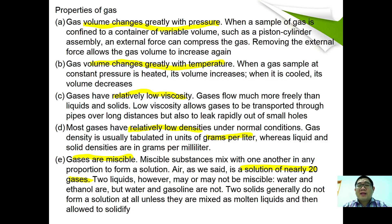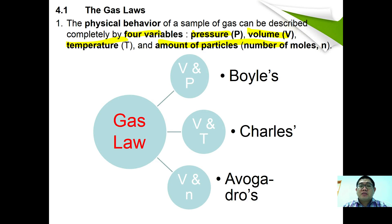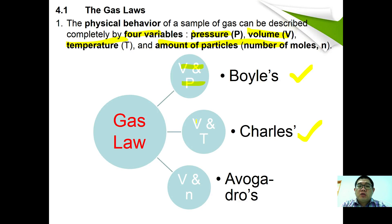The physical behavior of a sample of gas can be measured completely by four variables: pressure, volume, temperature, and amount of particles. The changes of these variables are described by three laws — Boyle's law, which relates volume and pressure; Charles' law, which relates volume and temperature; and Avogadro's law, which relates volume and number of particles.